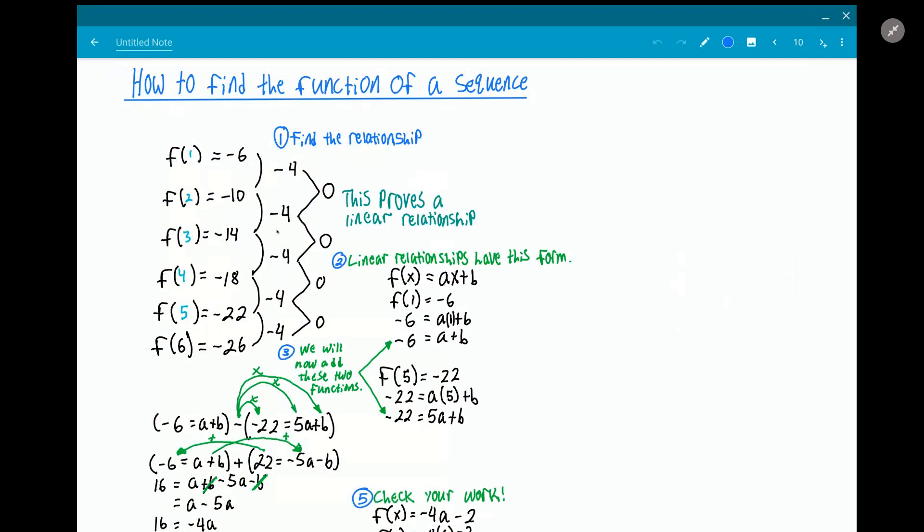And then you find the relationship between the relationship - between what changed. So in between each number it changed by -4. That means that there's no exponentials in this function and we can just use a linear relationship. So a linear relationship has the form f(x) = ax + b.